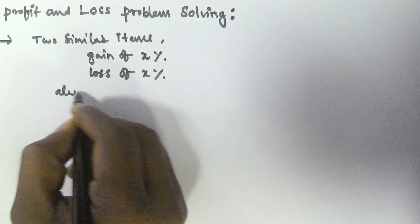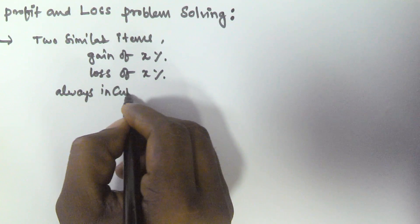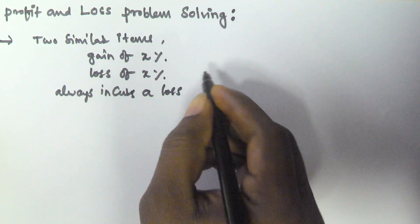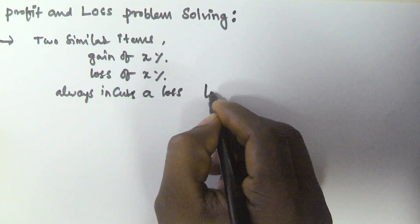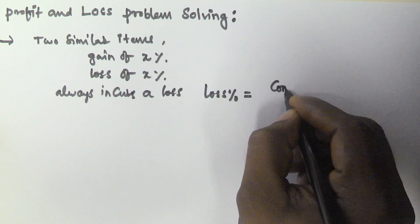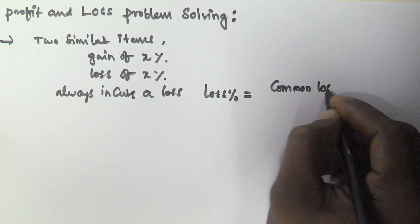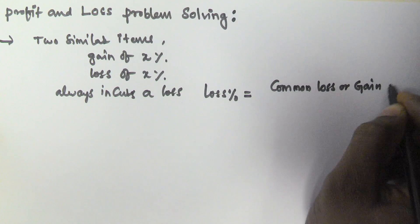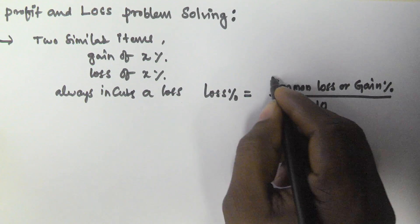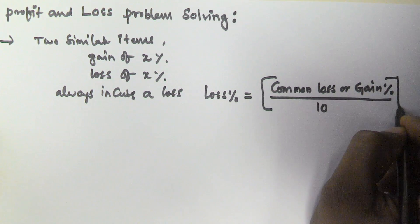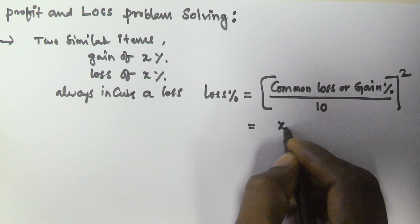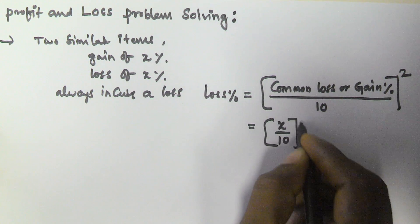The seller always incurs a loss, and the loss percentage is given by: loss percentage = (common loss or gain percentage / 10)². So in our case, the common value is x, which gives us (x/10)².